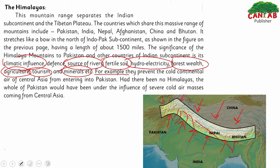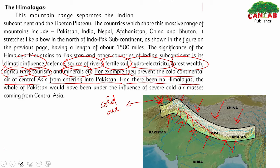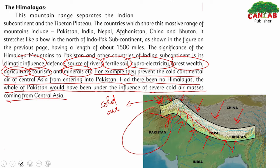The Himalayas prevent cold continental air from Central Asia from entering Pakistan. If there were no Himalayas, the whole of Pakistan would have been under the influence of severe cold air masses coming from Central Asia. So the Himalayas impact the climate, defense, rivers, soil fertility, hydro-electricity, forest wealth, agriculture, and tourism of the region.